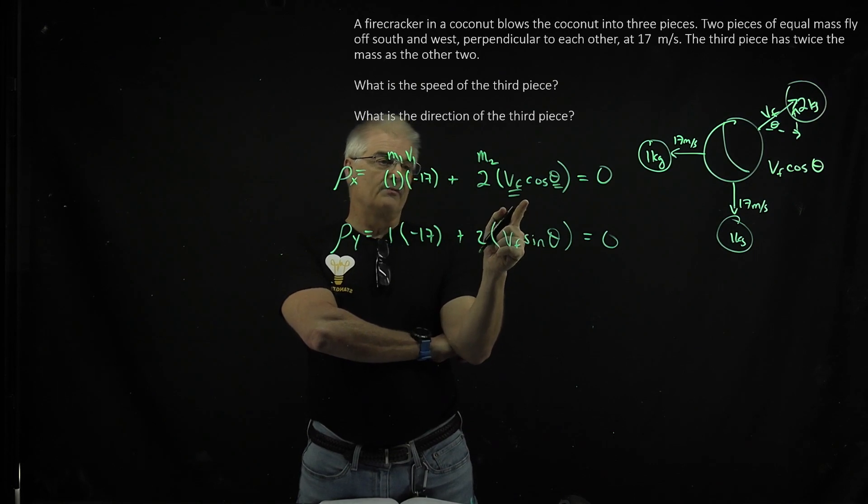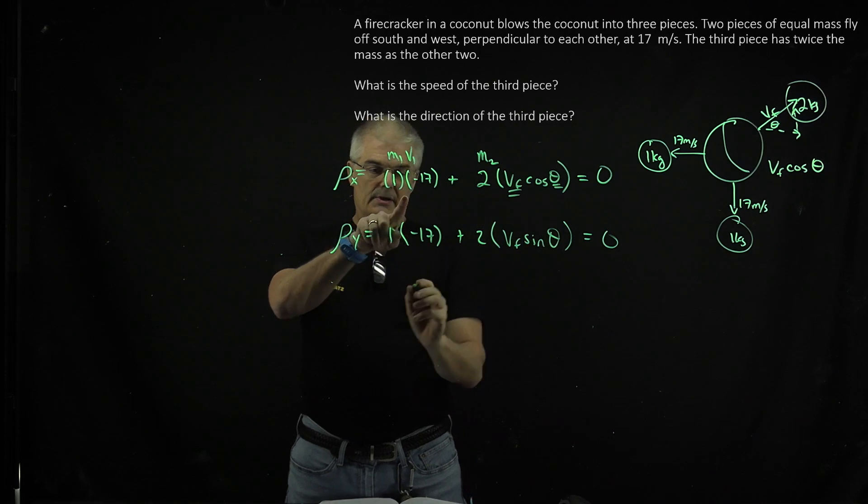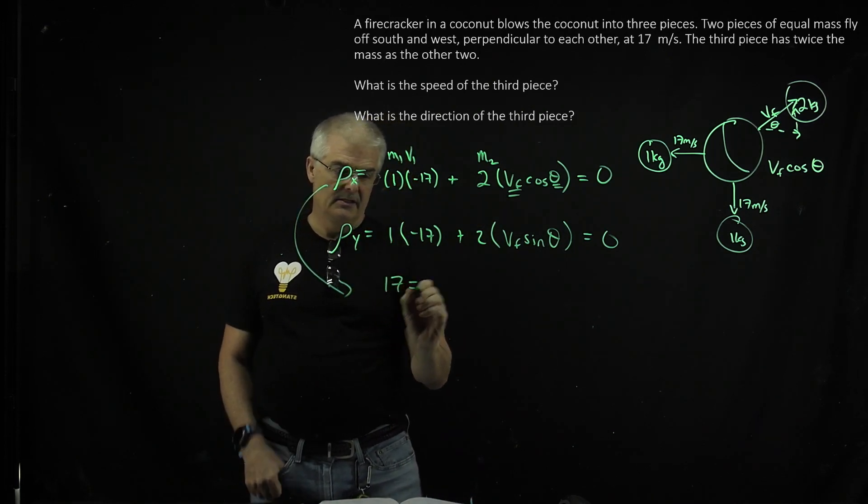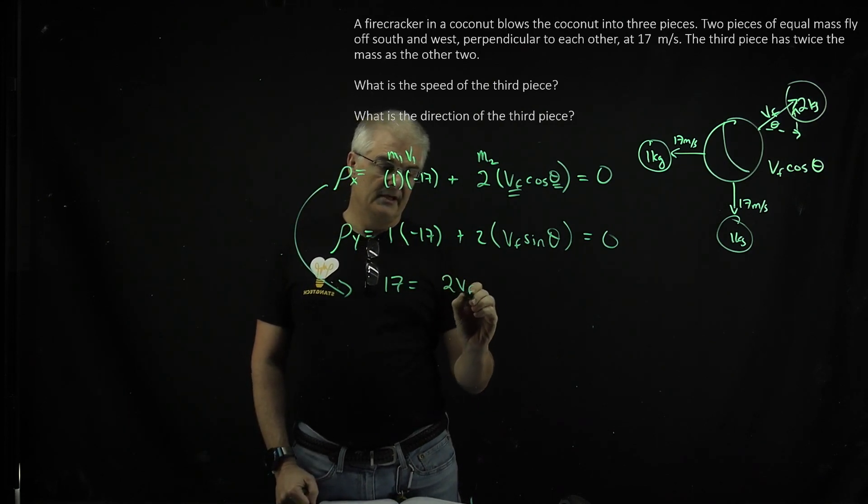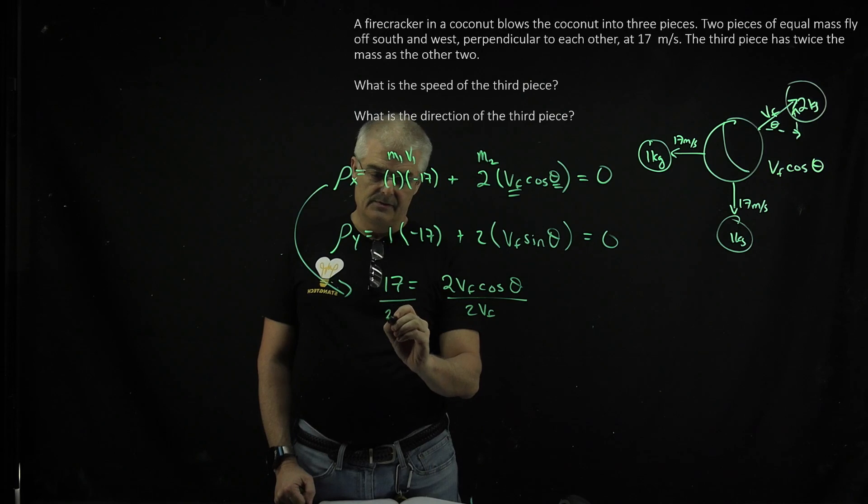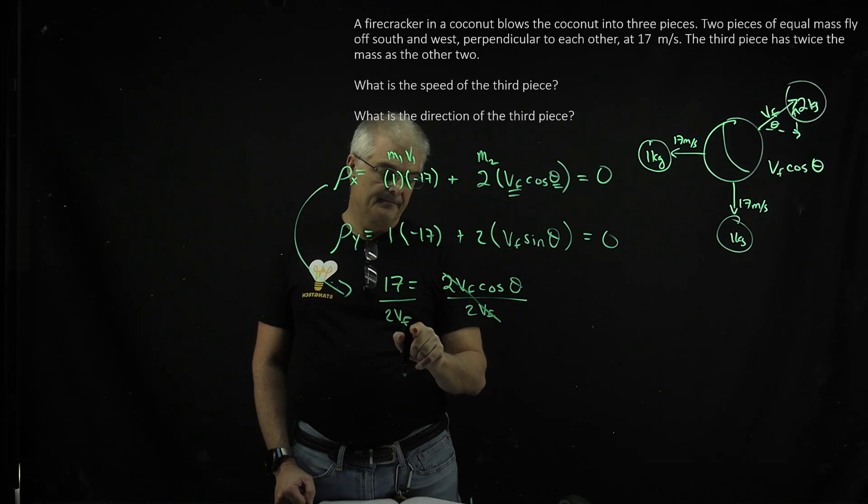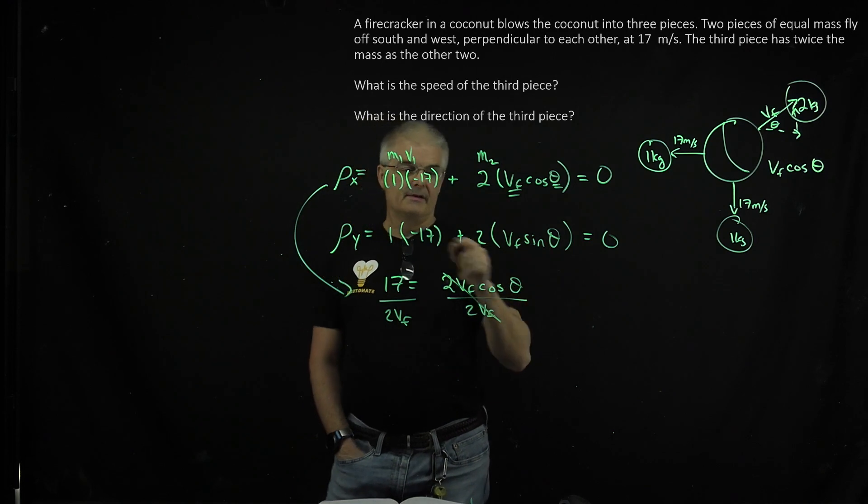So if I want to solve for theta, so this equals zero, so I can, let's rewrite this equation, I can say 17 equals, add 17 to both sides, equals two vf cos theta. If I divide both sides by two vf cos theta equals this. Oh, but that's sine theta, that's not going to work.